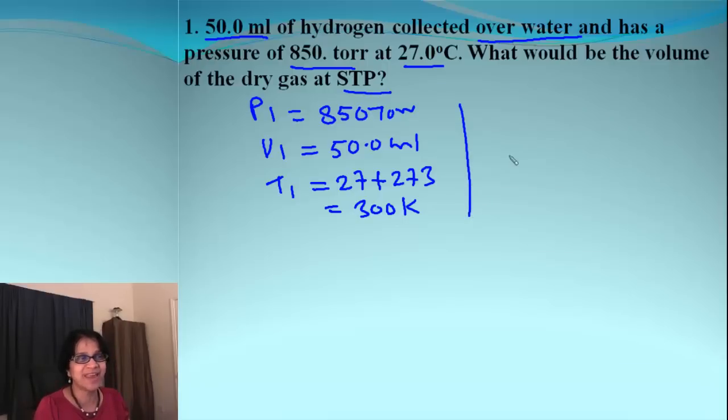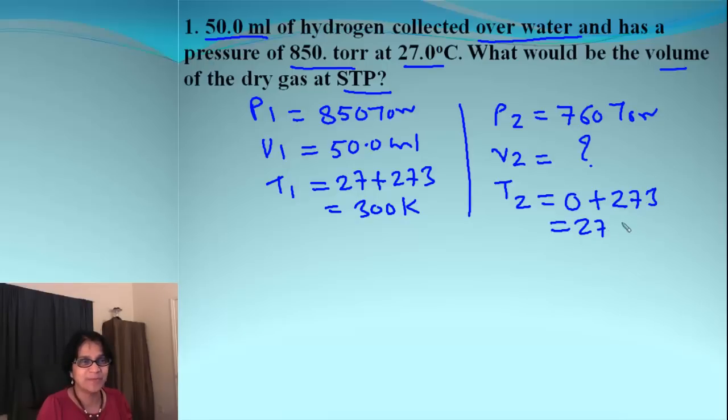What's the other set of conditions? It is STP. Do you remember that STP is standard temperature and pressure? Pressure is equal to 1 atmosphere or if you remember the value in torr is 760 torr. So volume is something we need to find out and temperature for the STP gas is 0 degrees Celsius plus 273. So we got 273 Kelvin.